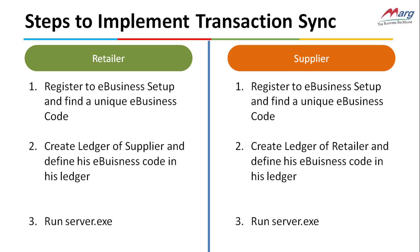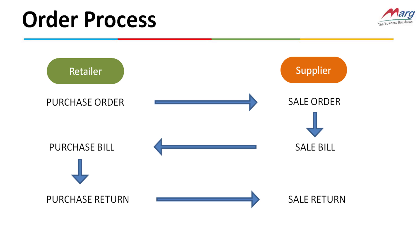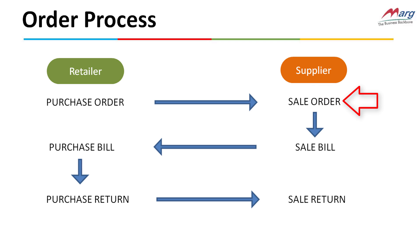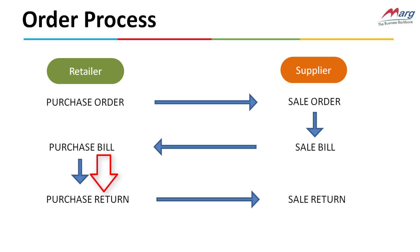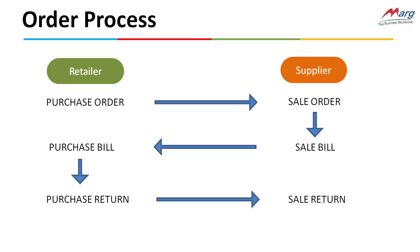After running server.exe, the order process can begin. When the retailer sends a purchase order to the supplier, that purchase order will be reflected as a sale order in the supplier's software. When the supplier converts that sale order into a sale bill, that sale bill will be reflected as a purchase bill in the retailer's software. If the retailer returns that order to the supplier, then that purchase return will be reflected as a sale return in the supplier's software.